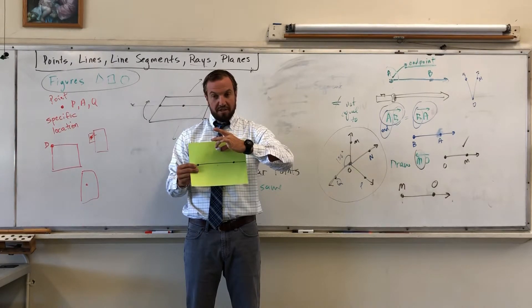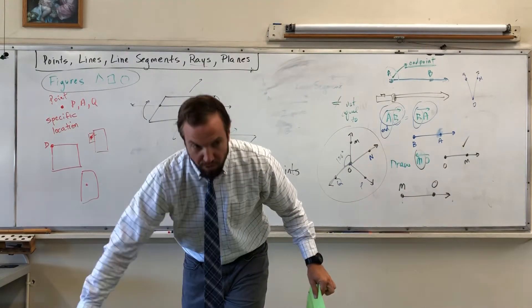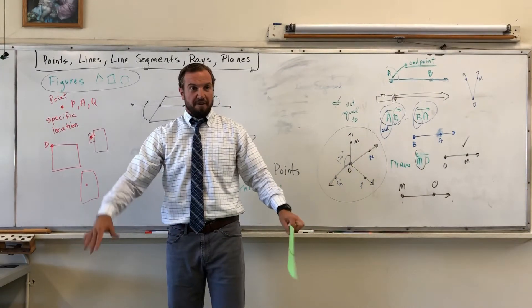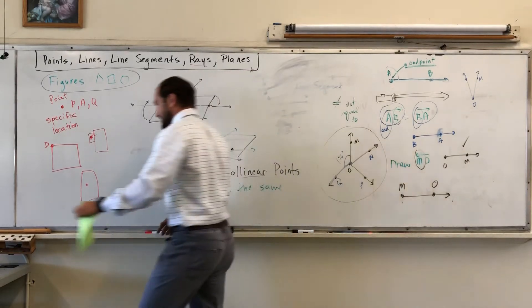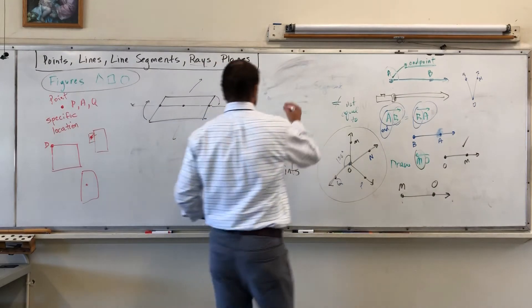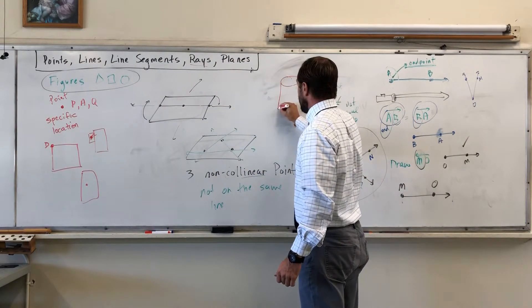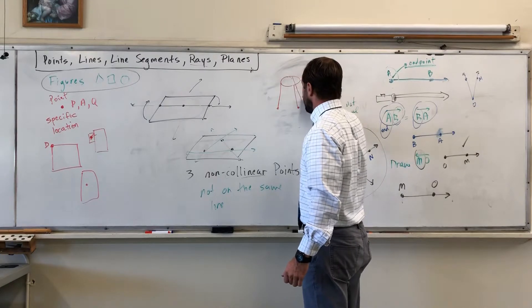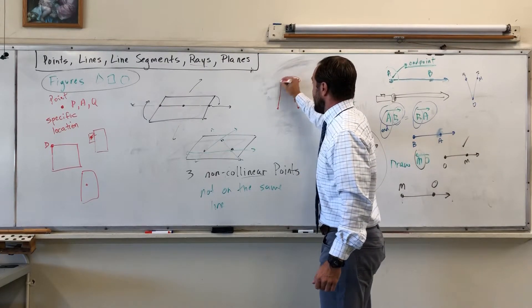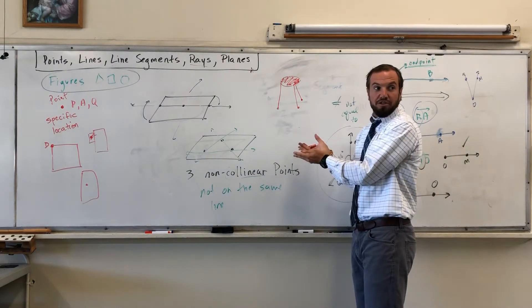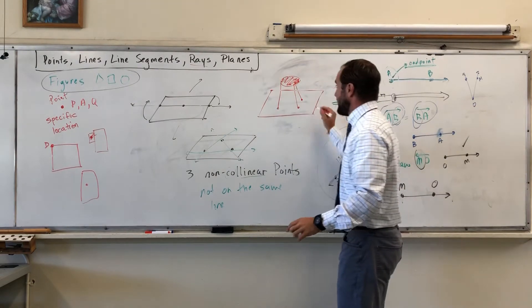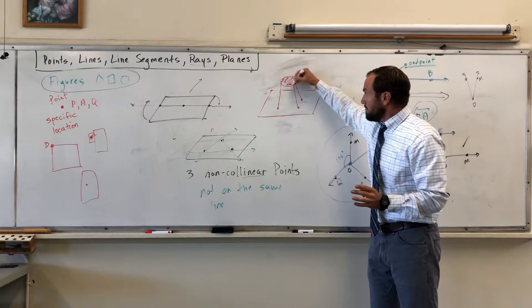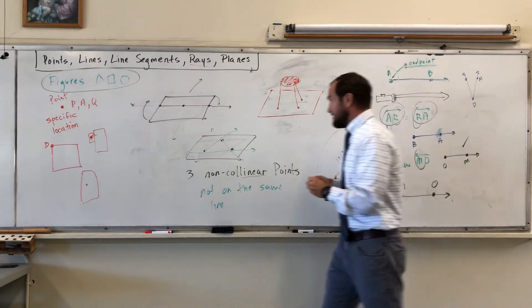The purpose of that third non-collinear point is to stop the plane and make it one certain surface. Like this floor — if I didn't have the corners as non-collinear points, the floor would just keep spinning. It's like a chair with three legs: I'd need those three legs to be non-collinear points so the chair would sit right down on the surface and not tip.